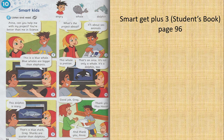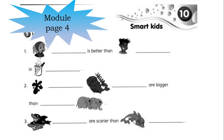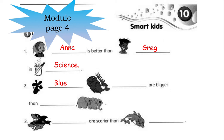Students, I hope that you understand the story now. Let's do our module, page 4. Who is better than who? Anna is better than Greg in science. Number 2 — blue whales are bigger than elephants. The last one — which animal is scarier? Sharks are scarier than dolphins.